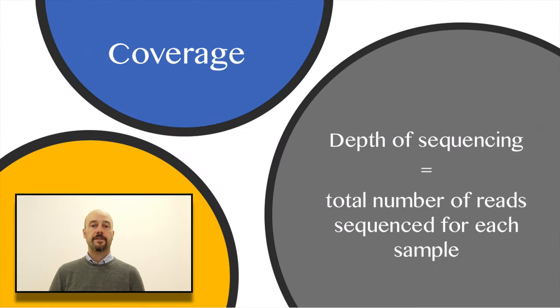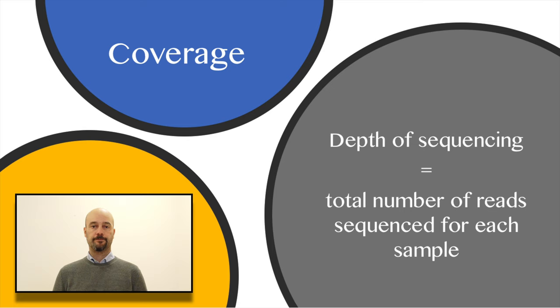Another important part of experimental design is coverage. By coverage we mean the total number of reads which sequence each sample. For a transcriptomic analysis, a standard transcriptomic analysis, the number of replicates is much more relevant than sample coverage, and 10 million reads would be okay. On the other hand, if we want to profile rare events or non-coding RNAs, or if we want to study alternative splicing, we need much more coverage. From 60 million to 90 million reads per sample would be okay.